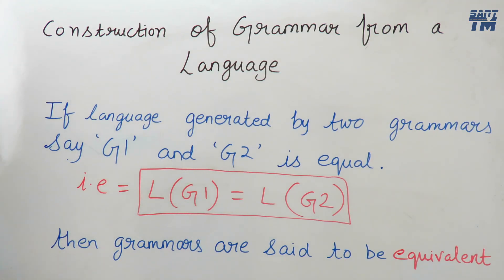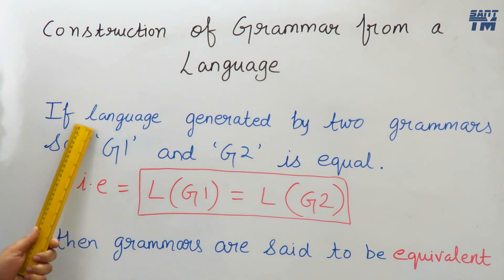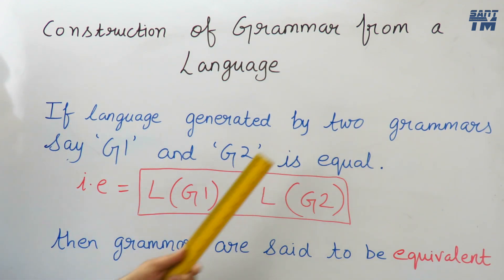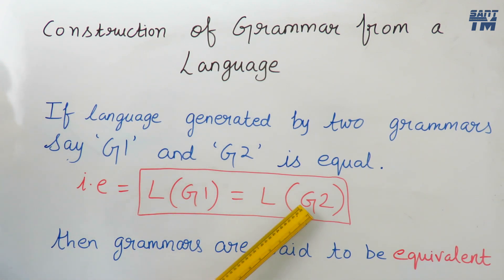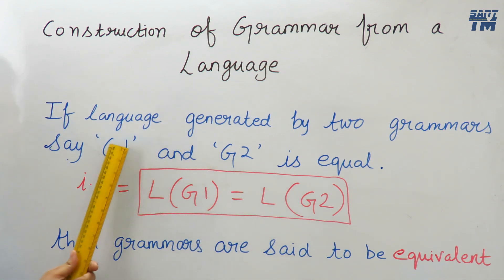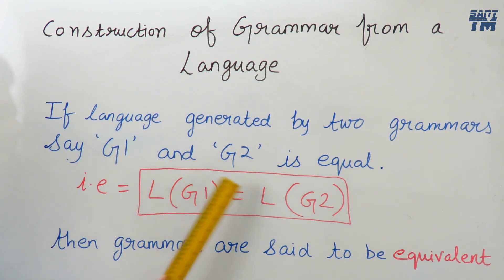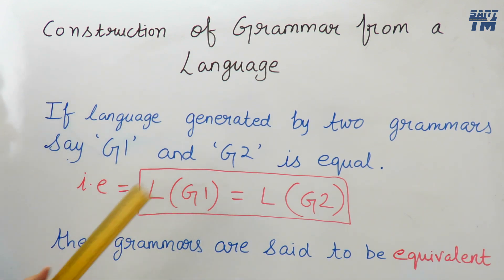Before moving on to the topic — construction of grammar from a language — I want to tell you one important property of language and grammar. The property is: if the language generated by two grammars G1 and G2 is equal, then the grammars are said to be equivalent. Now we shall discuss the main topic: construction of grammar from a language.